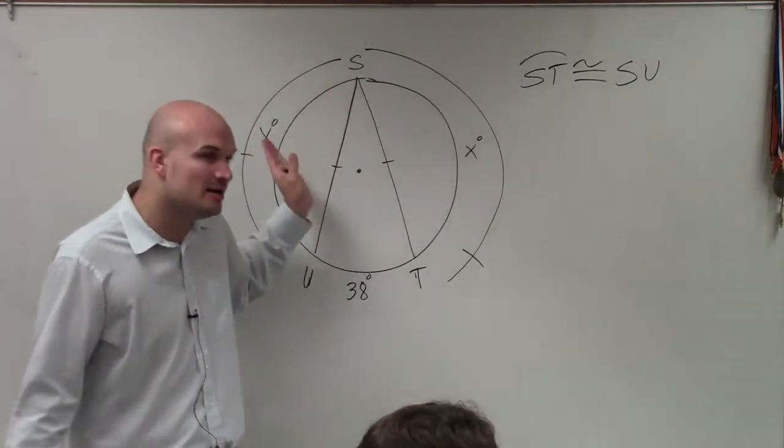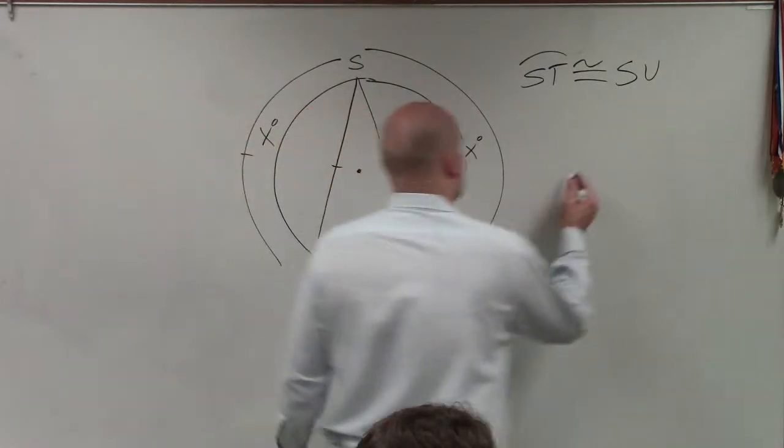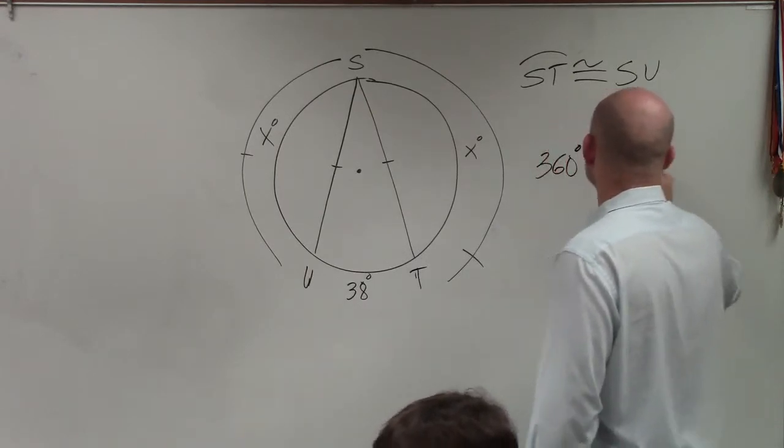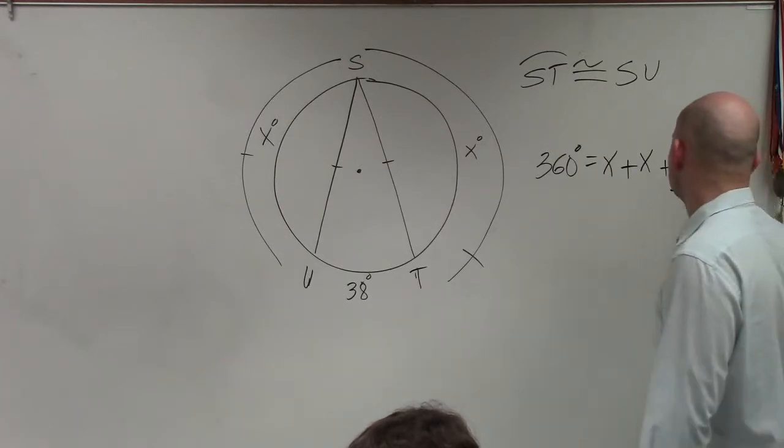Well, remember that the sum of all of our arcs is going to add up to 360. So you can say 360 degrees equals x plus x plus 38. Then we simply subtract 38.